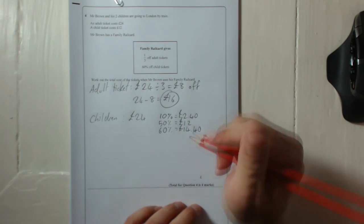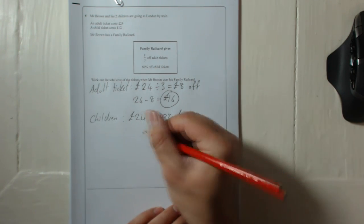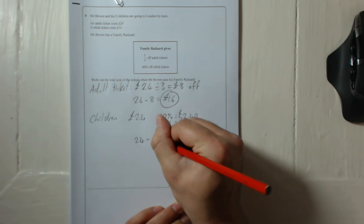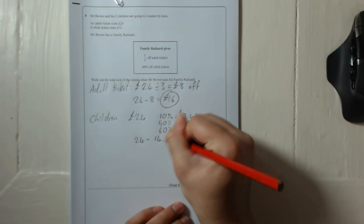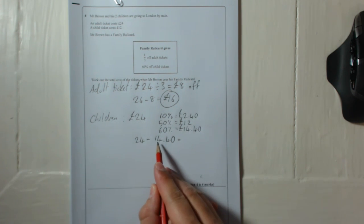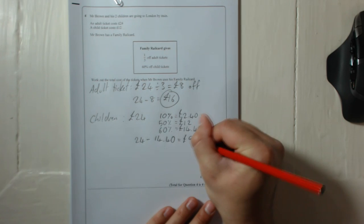So we're going to take that off because it's 60% off. Don't forget to do that. So that would be £24 take away £14.40. That would be, now be careful, 24 take away 14 is 10, so take away the extra 40p. That would be £9.60.